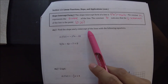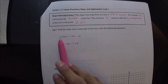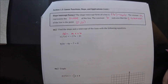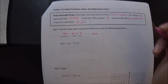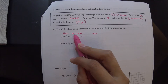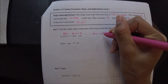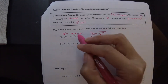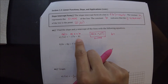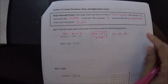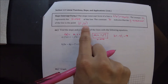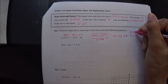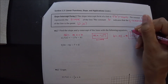Find the slope and the y-intercept of the lines with the following equations. This one is really straightforward because it's already in the form f of x equals mx plus b, so we just have to identify m and b. M is the coefficient multiplied to x, so m is negative 0.17 — that's our slope. Then b is negative 41, so the y-intercept is the point 0 comma negative 41. It's a point on the graph.